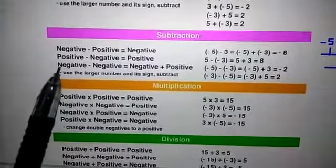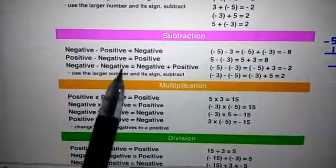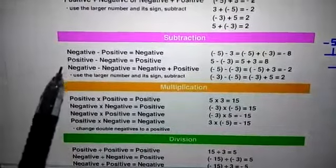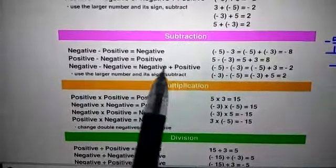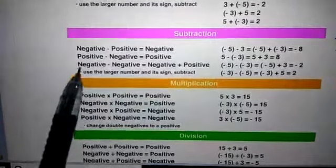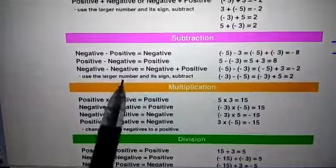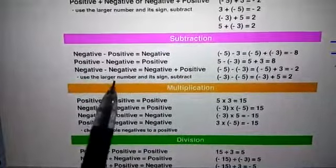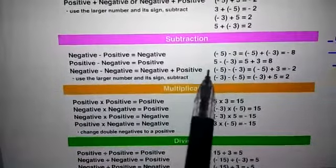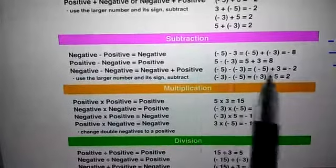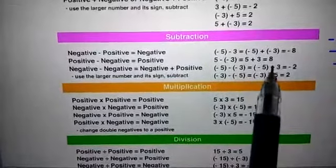Now we will see the third case of subtraction: if we subtract a negative integer from a negative integer. The result is calculated as negative plus positive. We use the sign of the larger number and then subtract. Here the larger number is minus 5, so the result is negative. Remember: minus minus equals plus.